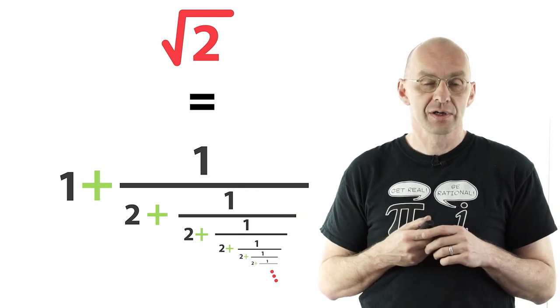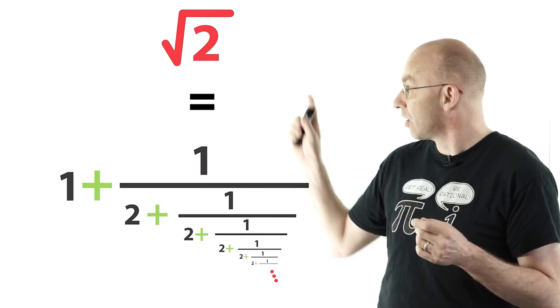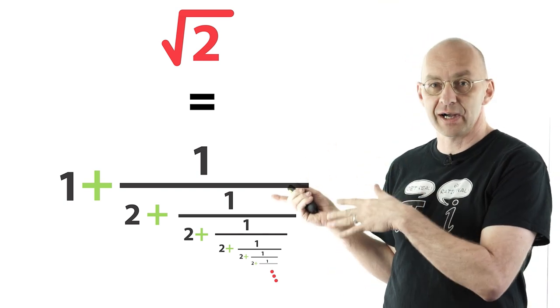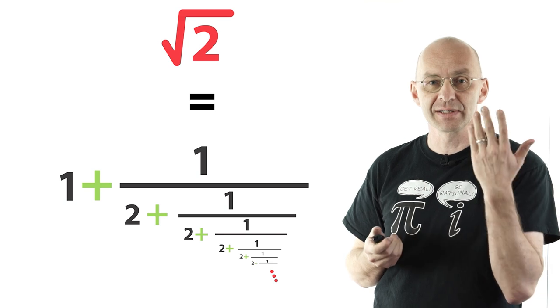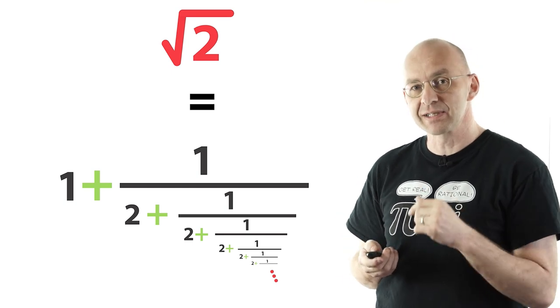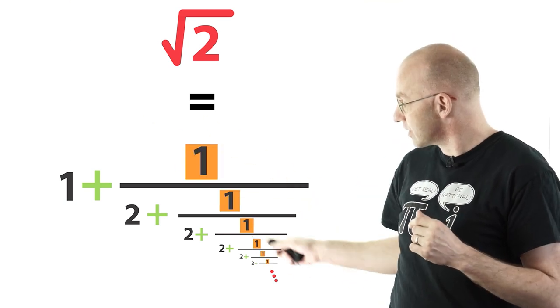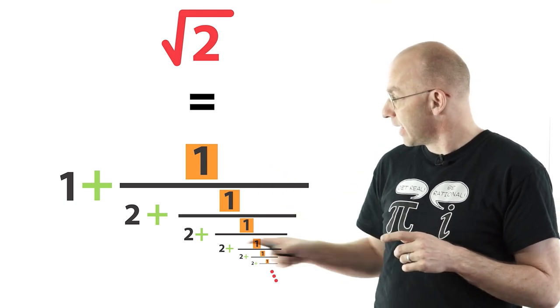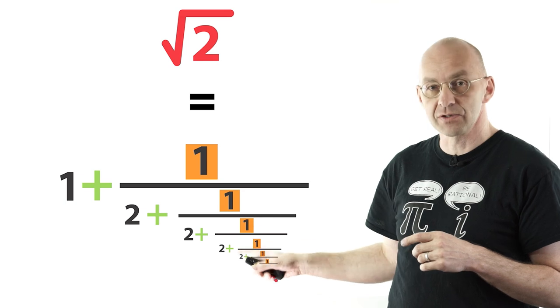And that gives me this continued fraction representation of square root of 2. Now this guy is a very special kind of infinite fraction. It's a simple continued fraction. What makes it simple is the fact that all the numerators here are 1s and you don't have any minuses here. So it's all pluses.